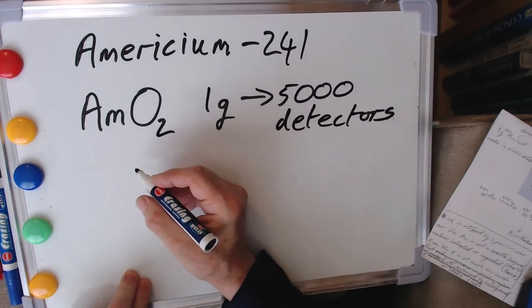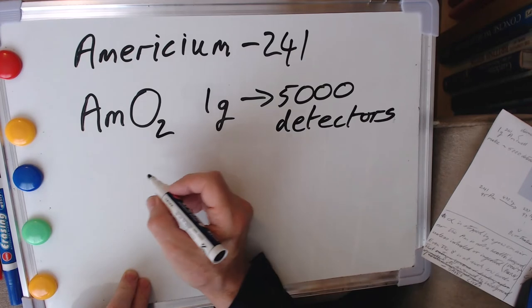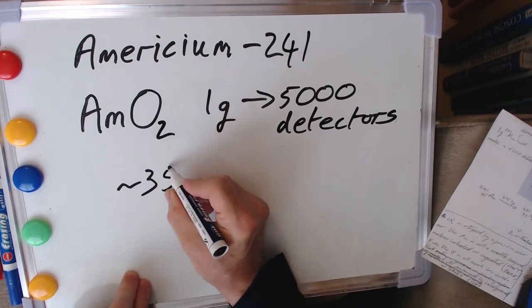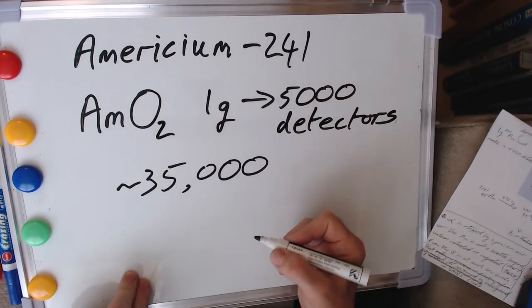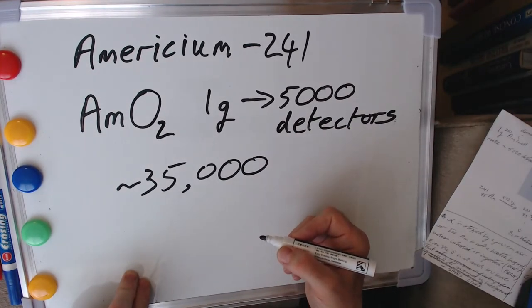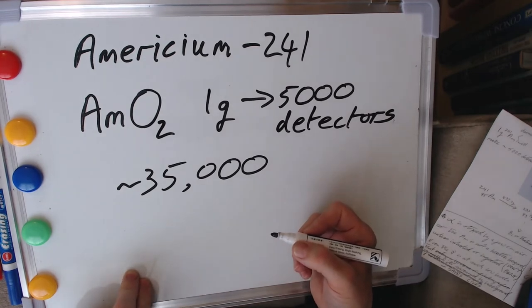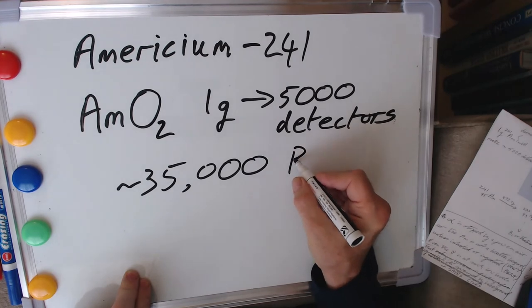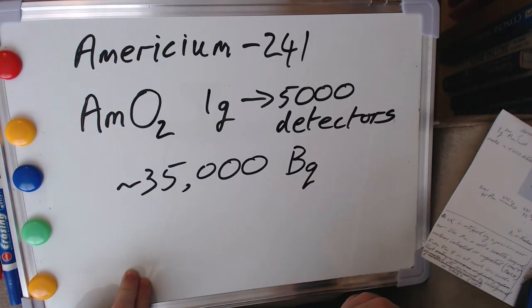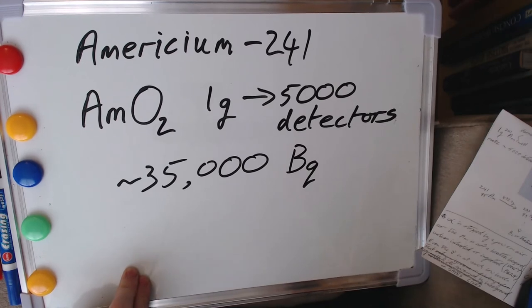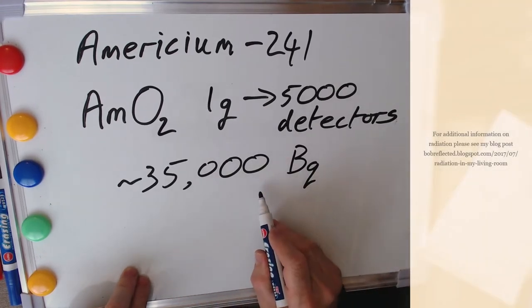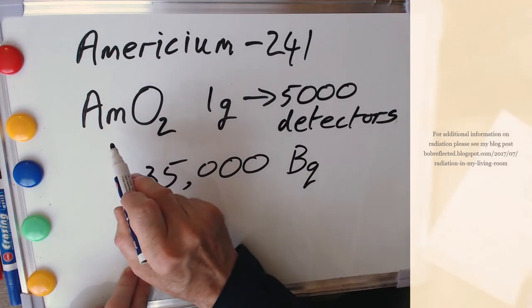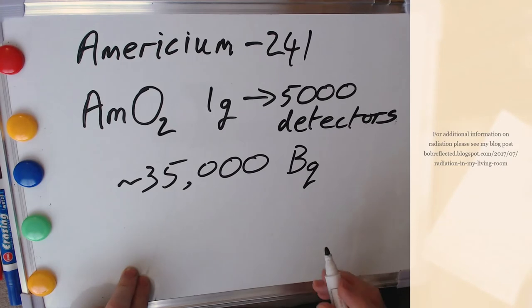But even with that tiny amount, what we're getting is enough ionizing radiation to make sure that the oxygen and nitrogen within our ionization chamber is ionized enough to complete the circuit I showed you earlier for our smoke detector. And in fact, when I say it's producing enough, what it's actually giving us is something in the region of 35,000 radioactive decay events per second. And the units for this are named after Henri Becquerel.